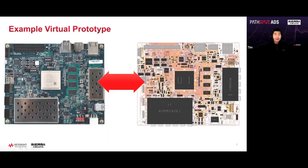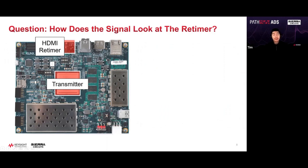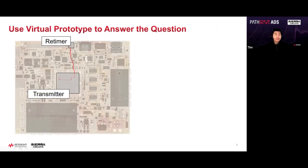Today we're going to talk about an example virtual prototype — a Xilinx FPGA DCU 104, all in the public domain. The question we're going to answer is: how does the signal look at the retimer? In the middle is a CPU transmitter; if we want to send a signal to the HDMI (High Definition Multimedia Interface) you have to go through the retimer because of the length and other technical aspects. We'll look at this in the real board layout, with the transmitter and retimer shown in the virtual world.